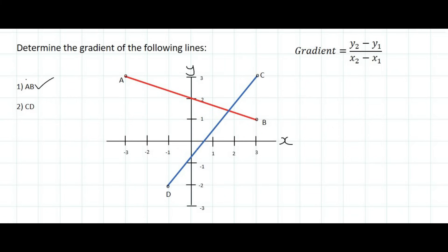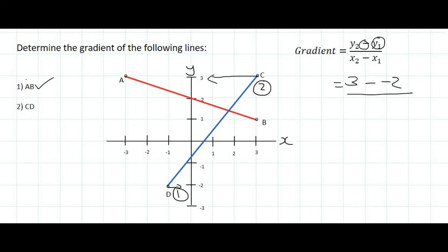Moving on to number 2, which is to find the gradient of the line CD. I'm just going to call C number 2 and D number 1. So the formula says I should start with the y value of point number 2 — so I go to point number 2, which is C, and I look at its y value, which is 3. Then the formula says I must put a minus. Then I look at the y value of point number 1, which is point D, and I look at its y value, which is minus 2. Then it says I must look at the x value of point number 2, which is C, and I find its x value, which is 3 minus. And then I look at the x value of point number 1, which is minus 1.